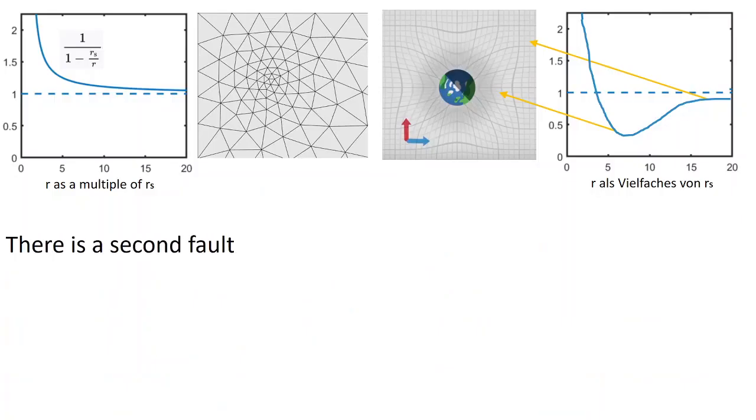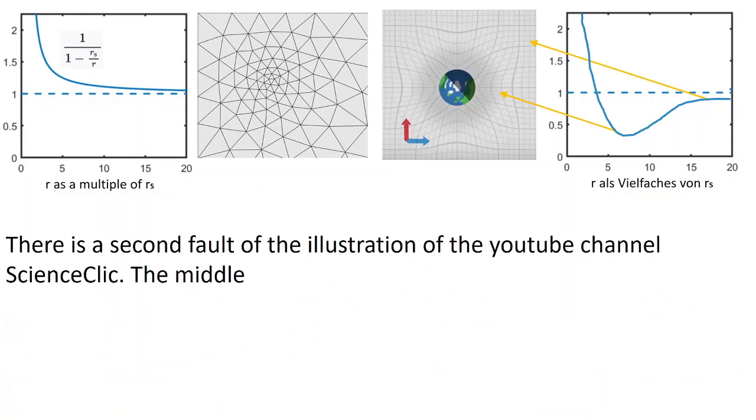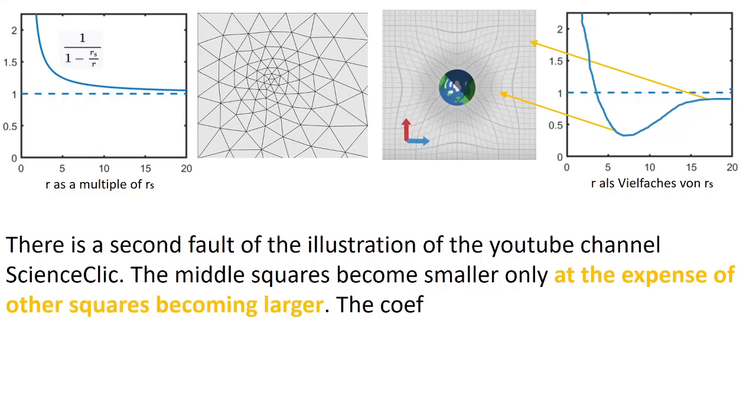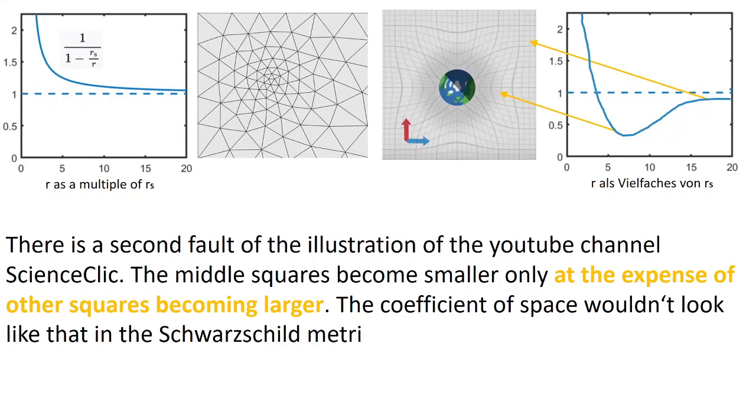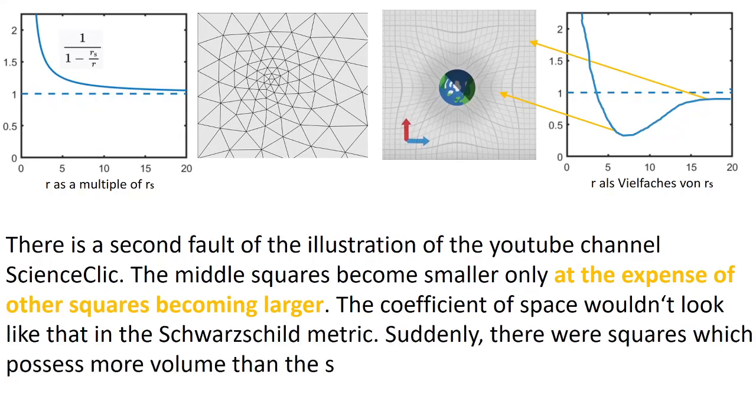There is a second fault of the illustration of the YouTube channel ScienceClick. The middle squares become smaller only at the expense of other squares becoming larger. The coefficient of space wouldn't look like that in the Schwarzschild metric. Suddenly, there were squares which possess more volume than the squares of the background.